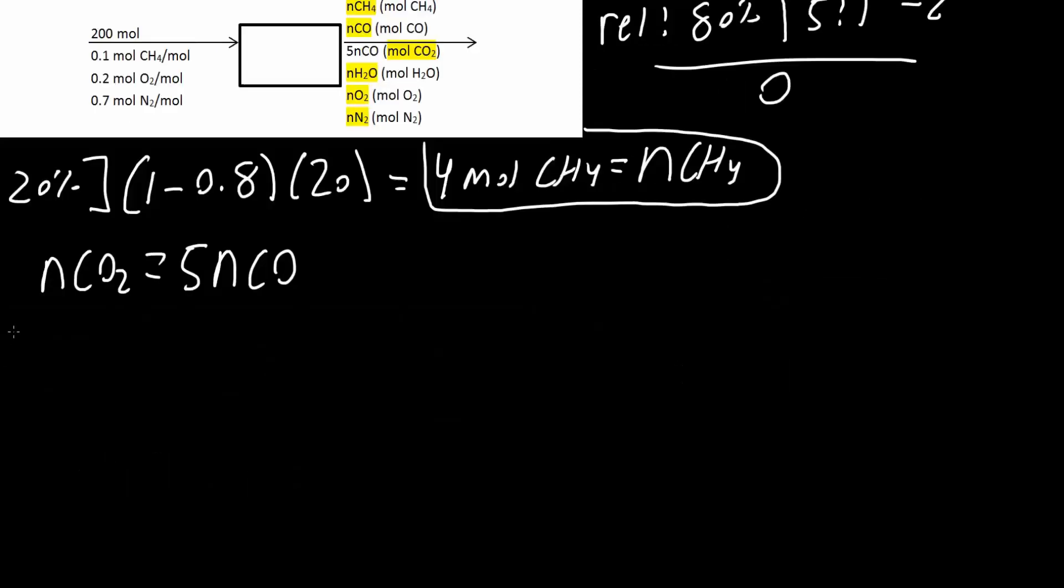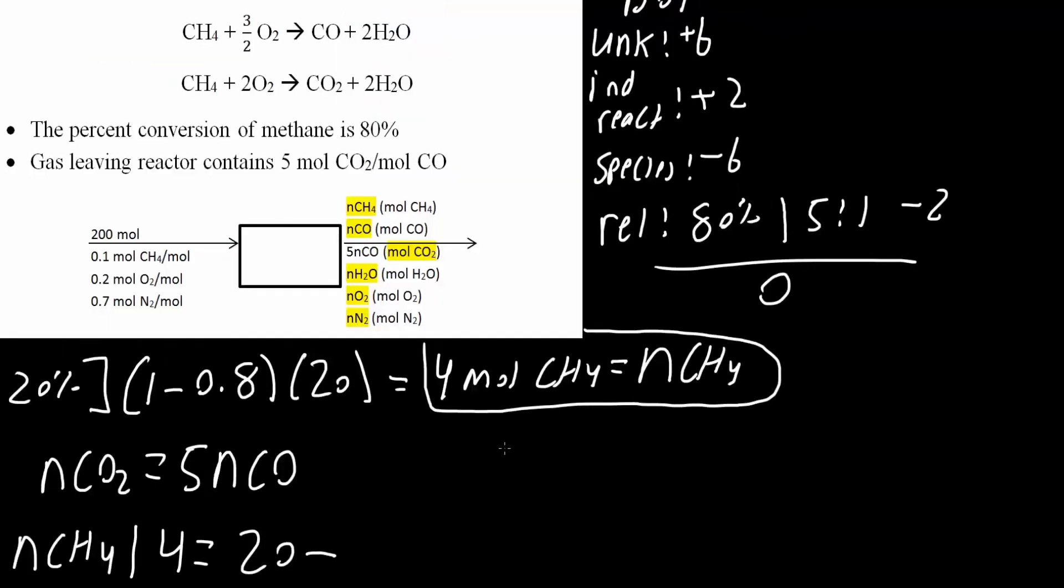And now we will do the extent of reaction equations. So we have NCH4, which we already found. So that was four is equal to 20 minus, now CH4 is written in twice, here and here. So we say extent of reaction one minus extent of reaction two.